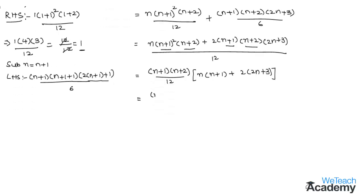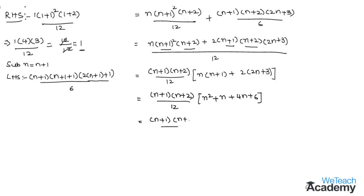Expanding 2(2n+3) gives 4n+6. So the bracket becomes n² + n + 4n + 6 = n² + 5n + 6. We now have (n+1)(n+2)/12 × (n² + 5n + 6).